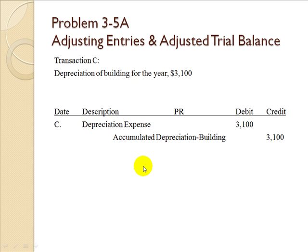In Transaction C, depreciation of the building for the year is $3,100. Depreciation expense is debited $3,100 and accumulated depreciation for the building is credited $3,100. Accumulated depreciation is a contra-asset account, which means it contradicts the asset it belongs to — in this case, the building.